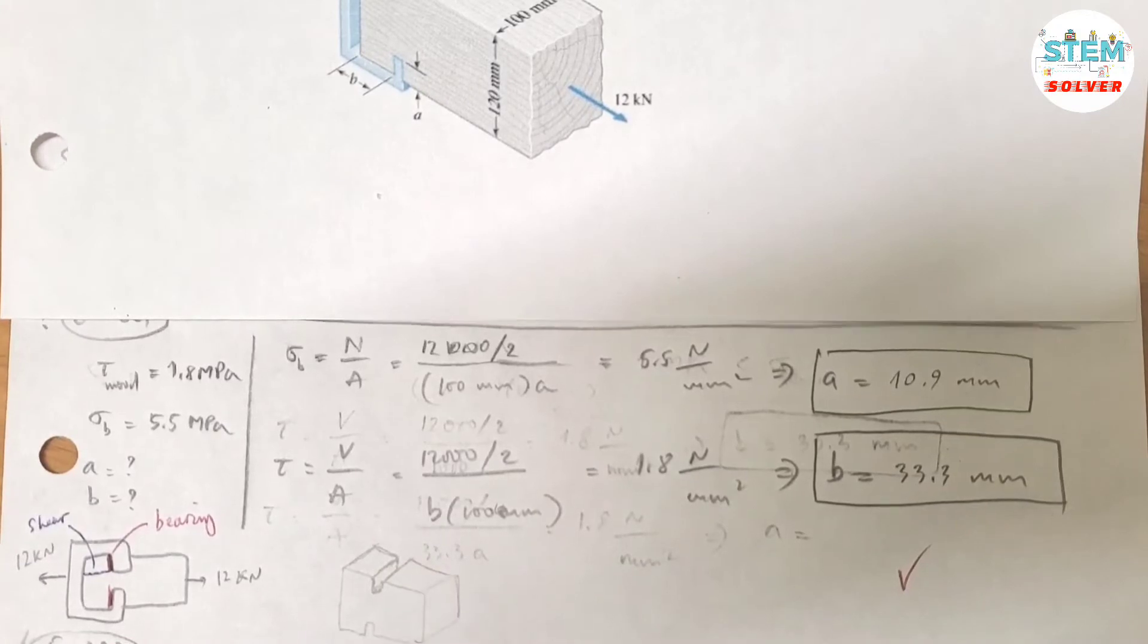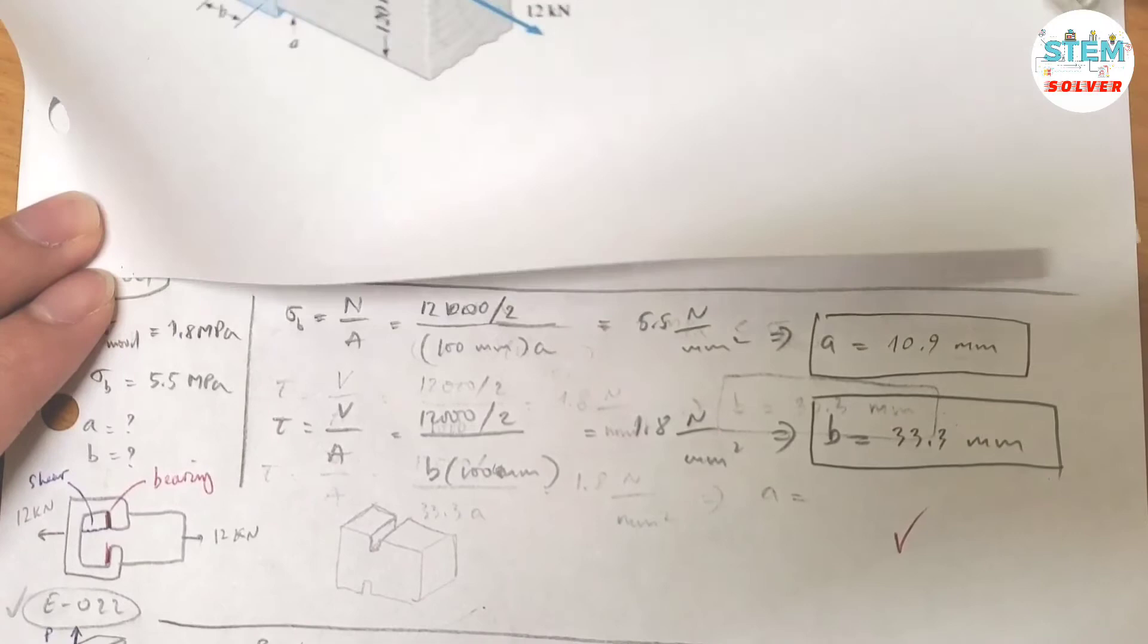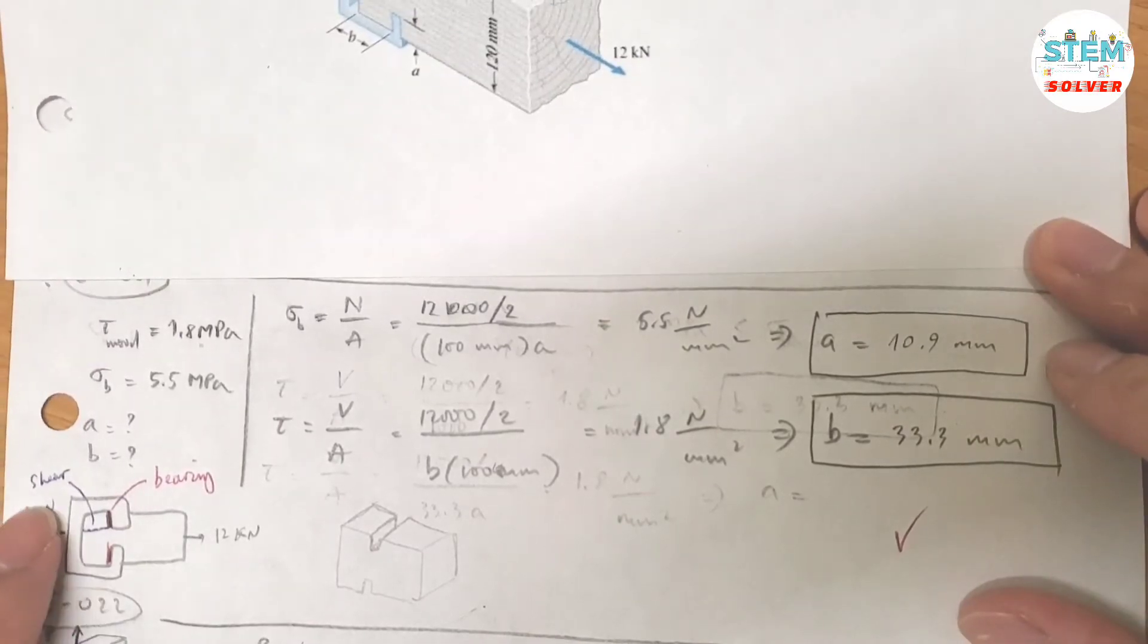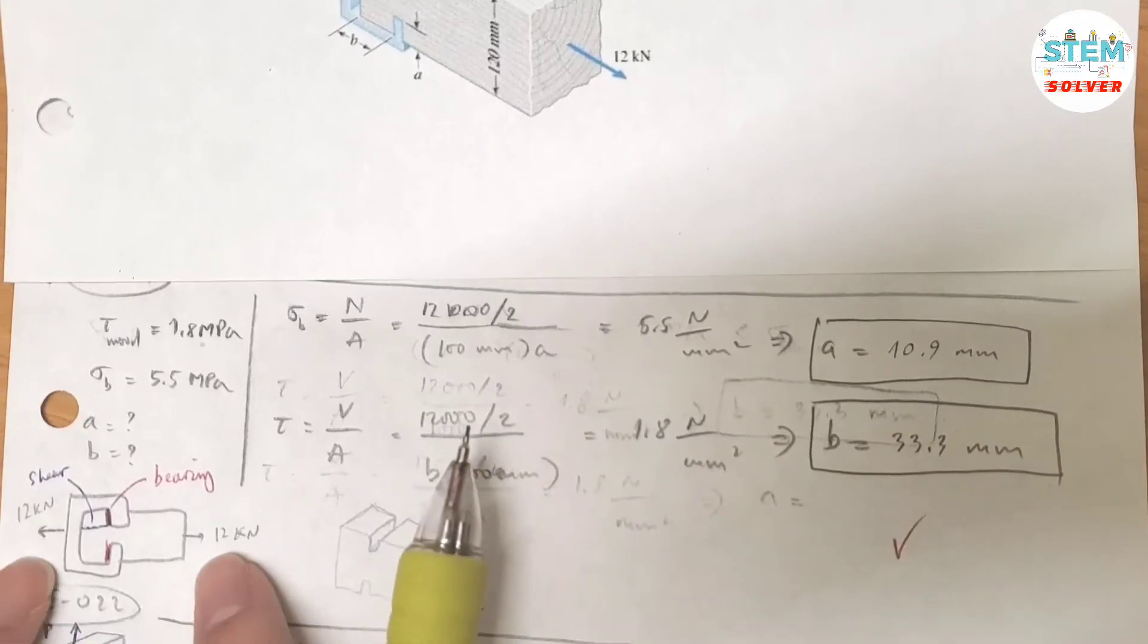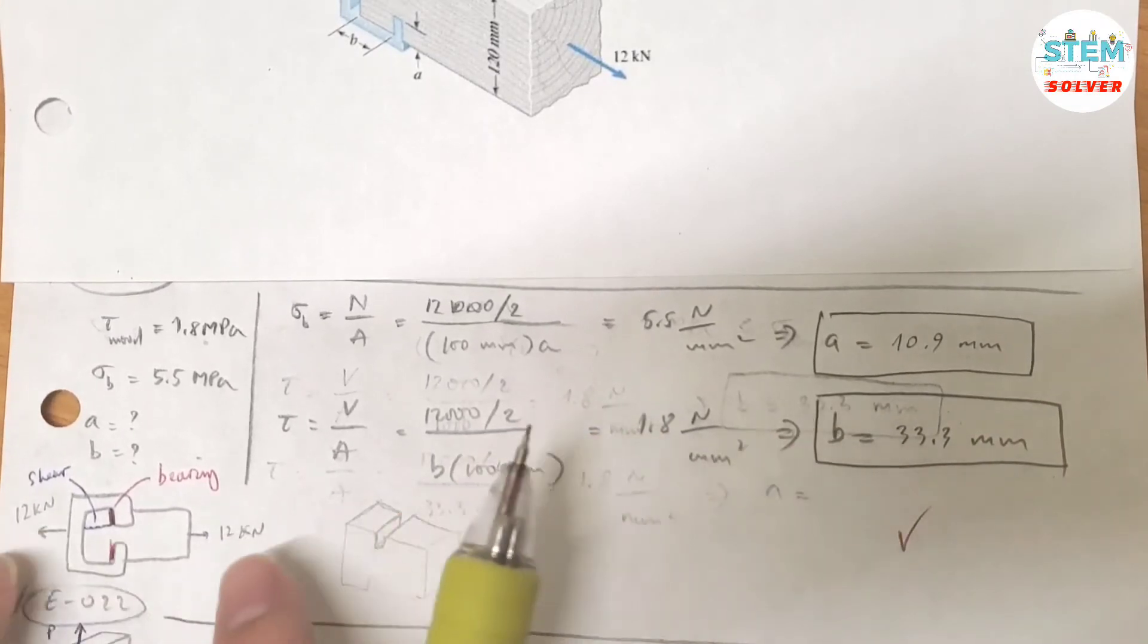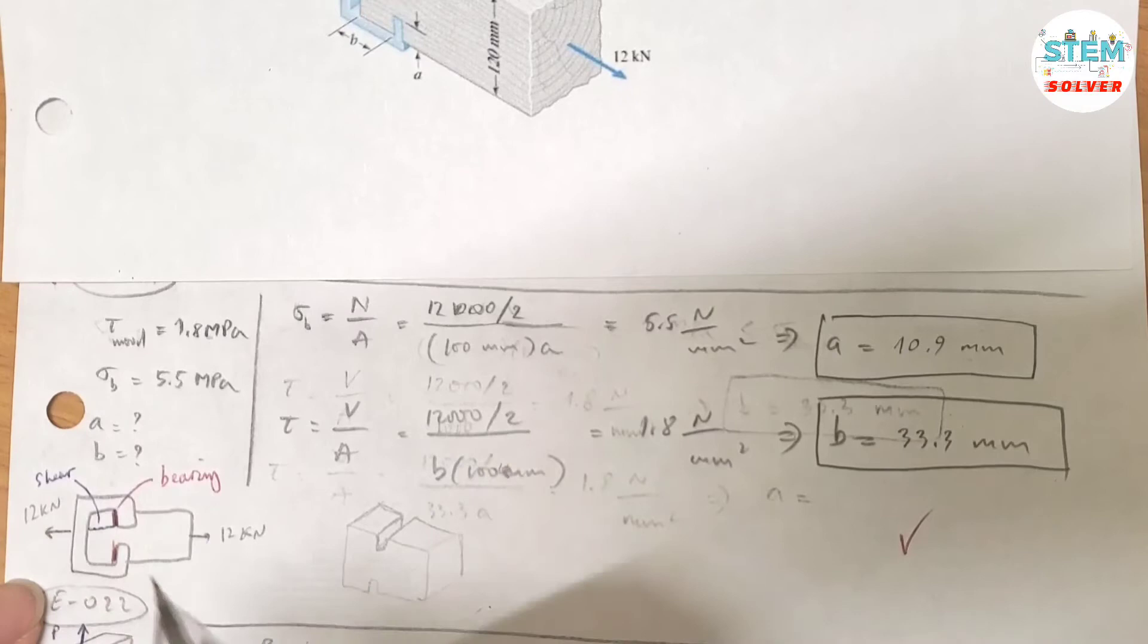This is the side view down here. You have a shear right here. When you have a force applied on both ends pulling this apart, the shear force is right here. It tends to break the wood, this part of the wood, only this part.